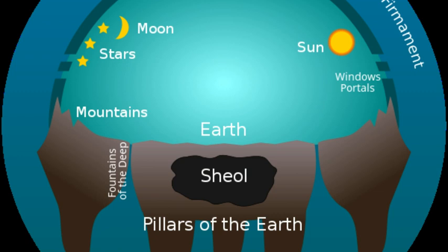God asks Job: what were the earth's foundations set on, and who put its cornerstone in place? He's asking what do you know about the marvelous works I have done — you don't understand anything, so how can you question me? In Job 38:18, He asks: do you understand how wide the earth is? So obviously it cannot be round — it cannot be a sphere — although it is encased in a sphere shell.